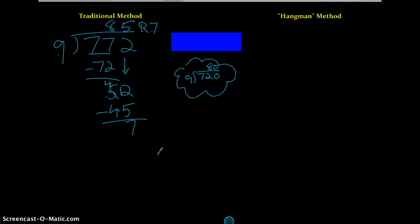The hangman method is pretty much the same way of doing it, only looking at it from a different point of view. And it's going to call into play your estimation skills. A lot of kids like this because they can break it up into even more manageable pieces. Here's how it works.